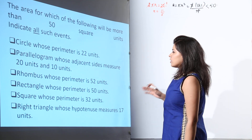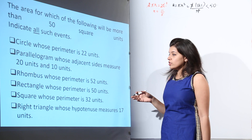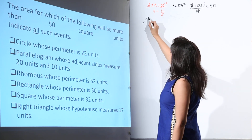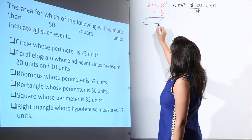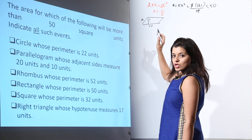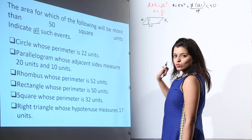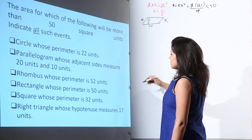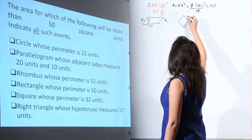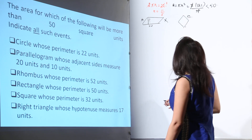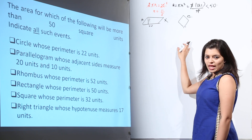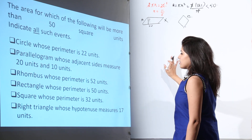The second case: a parallelogram whose adjacent sides measure 20 and 10 units. We do not know the height of this parallelogram, so we cannot calculate the area. The third case: a rhombus whose perimeter is 52. In this case also, we cannot say anything about the area, so it is not possible to calculate the area.